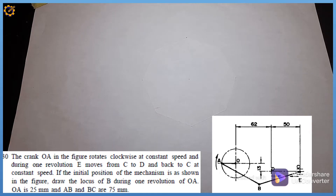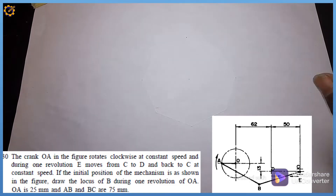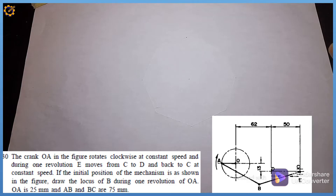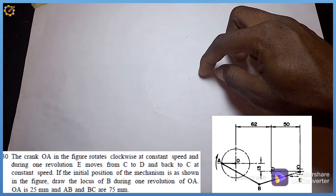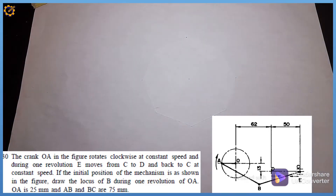The crank OE in the figure rotates clockwise at constant speed, and during one revolution it moves from C to D and back to C. The question asks: what happens when it moves from C to D and back to C in a complete revolution? The speed doesn't vary — it maintains the same constant speed from C to D and back to C.